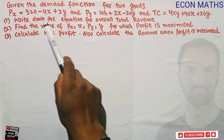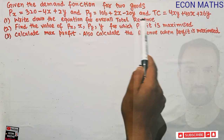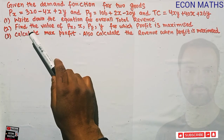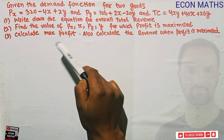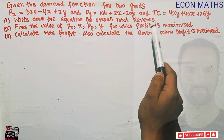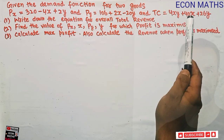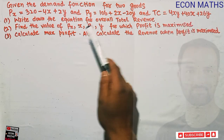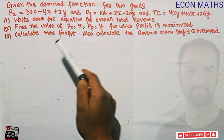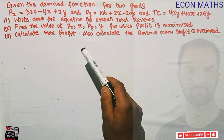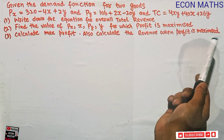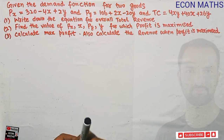The question asks us to write down the equation for overall total revenue — the aggregate revenue. Second, we have to find the profit-maximizing values of P_X, X, P_Y, and Y. We also need to calculate the maximum profit and the total revenue when profit is maximized.